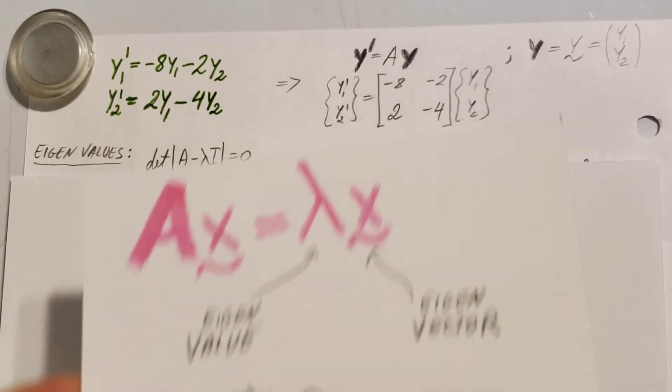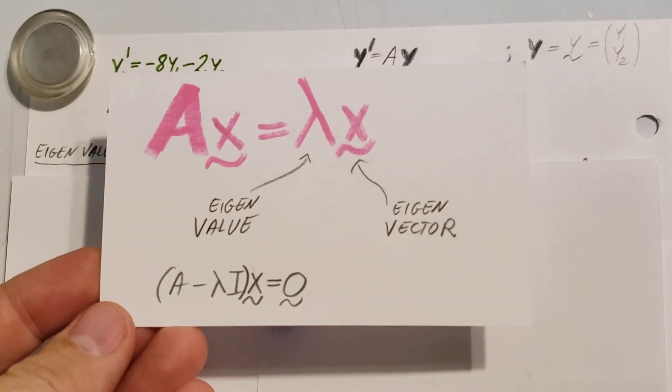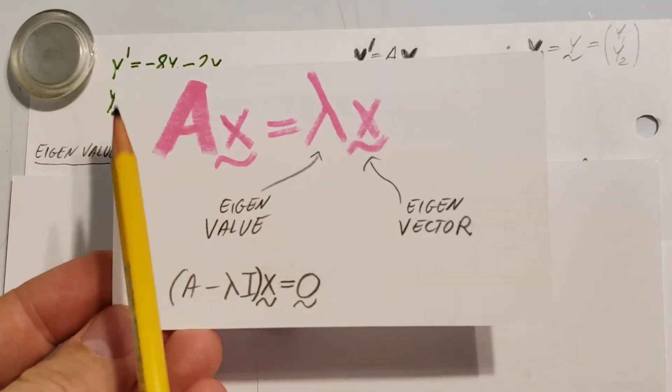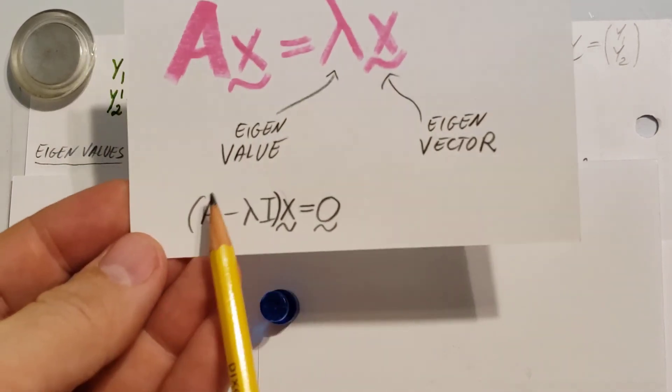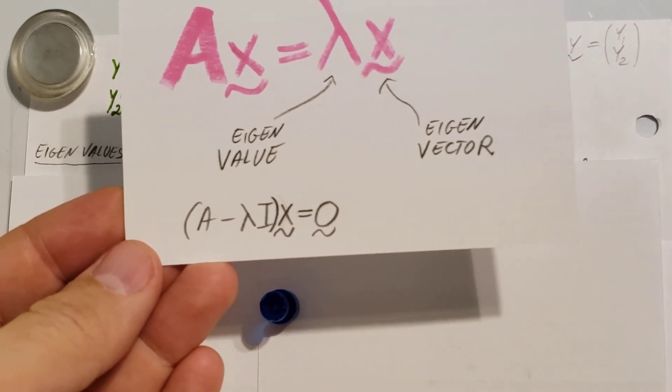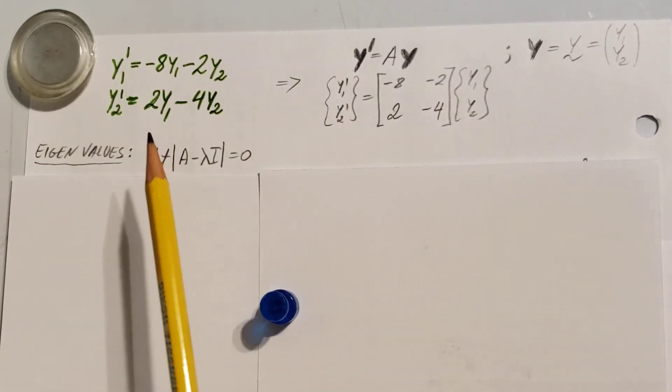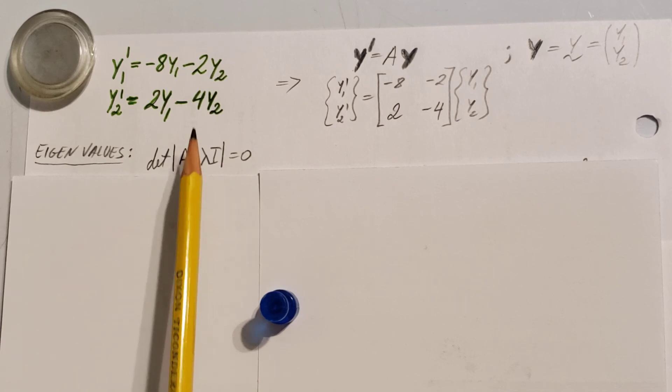So first up, let's find our eigenvalues. Here's a little reminder, in case you forgot where eigenvalues and eigenvectors come from. We have this equation - this is our eigenvalue, eigenvector, and this one is the same thing as this one, just a little bit modified. So we're going to work to find our eigenvalues, and that's going to be finding the determinant of A minus lambda I equals 0.